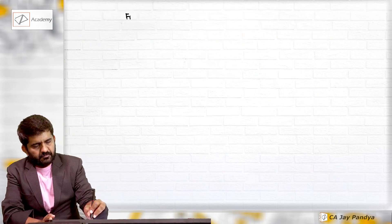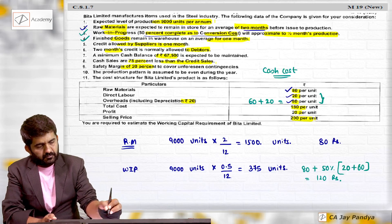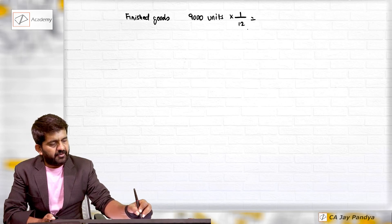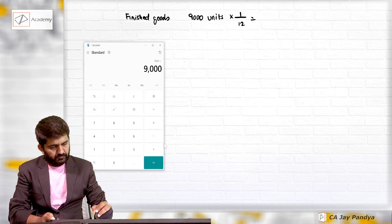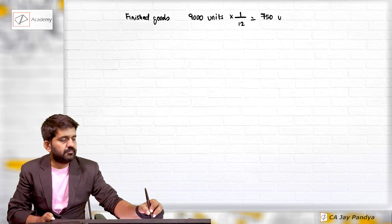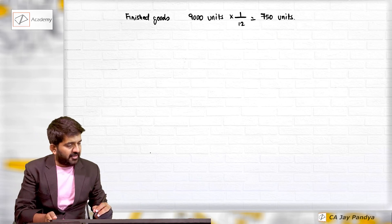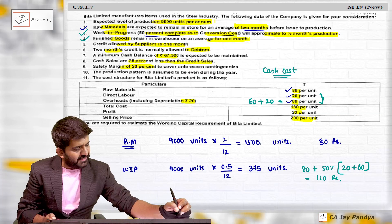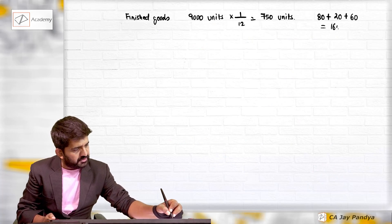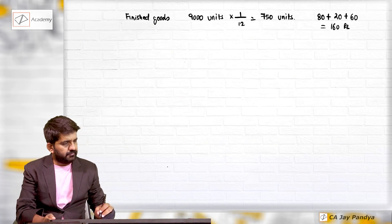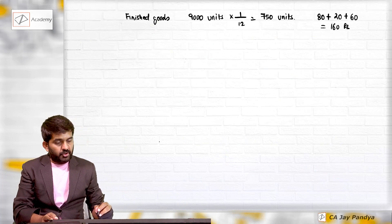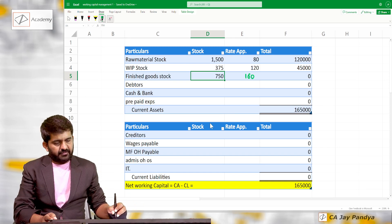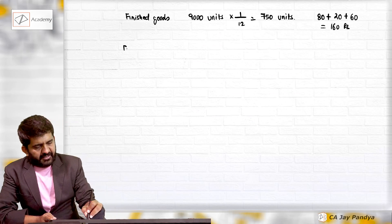Finished goods remain in warehouse for one month. Finished goods = 9,000 units × 1 ÷ 12 = 750 units. The rate should be 100% production cost: ₹80 raw material + ₹20 labor + ₹60 overhead excluding depreciation = ₹160 per unit. So finished goods = 750 units at ₹160.